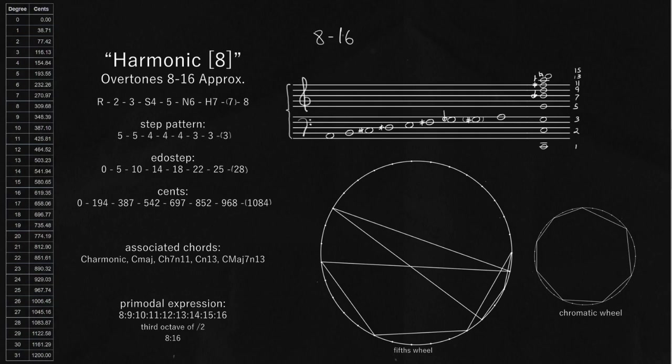It's a pretty decent approximation. If we start to stack it up, we get a root, we get 2, major 3rd, super 4th, perfect 5th, the neutral 6, the harmonic 7, the major 7, which is kind of a unique note here, so we're going to put a little dotted line below this one. And then lastly, the octave.